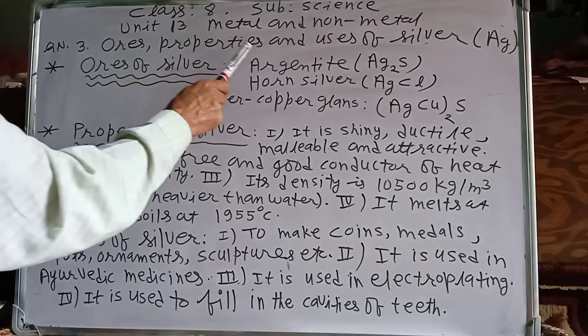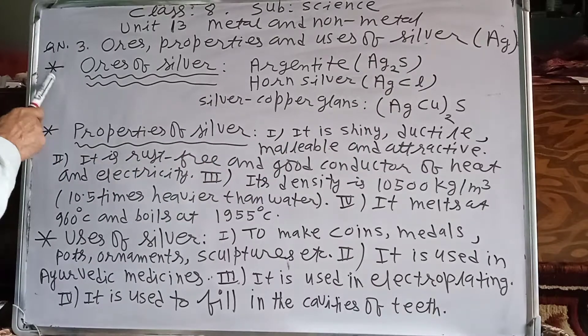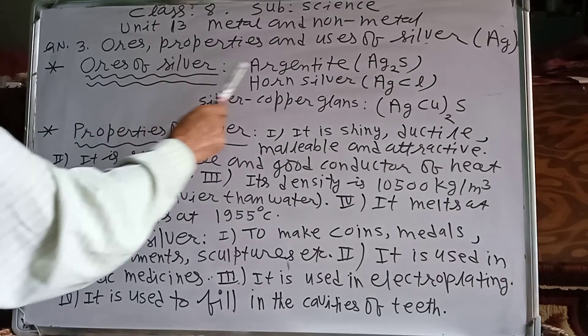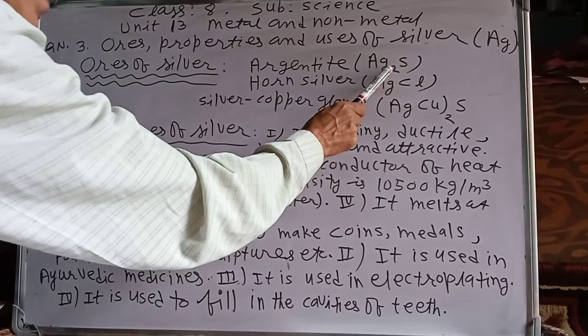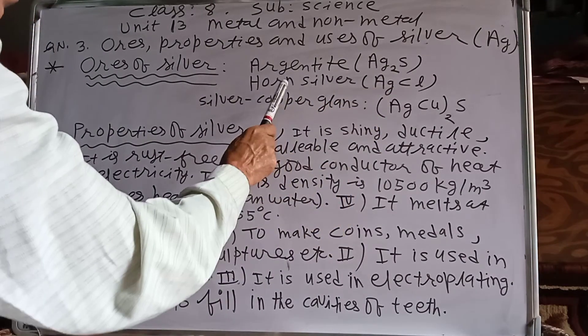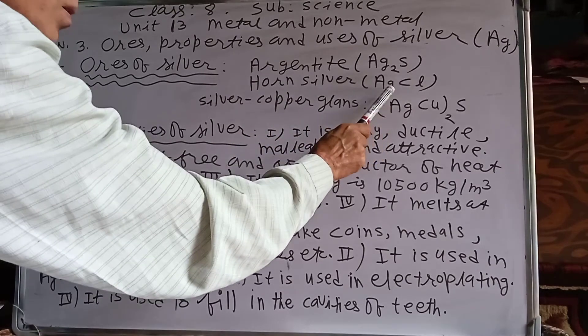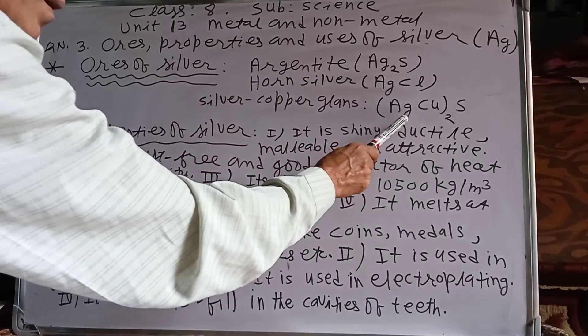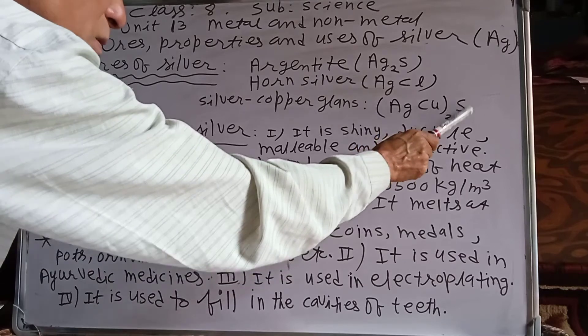Question number 3, ores, properties and usage of silver, Ag argentum. A, ores of silver: argentite or silver sulfite Ag2S formula, or silver that is AgCl or silver chloride, silver copper glands AgCu S, silver copper sulfite.